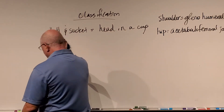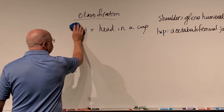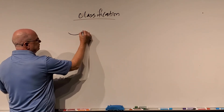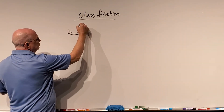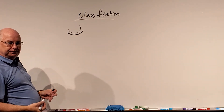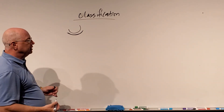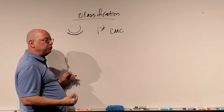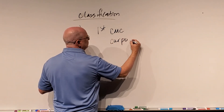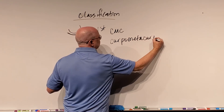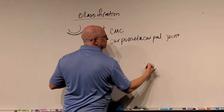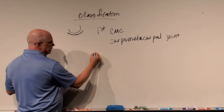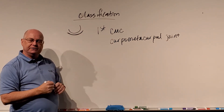The next type is a saddle joint. Think of a saddle placed on a horse — the top is dished out with a fossa. There aren't many great examples of saddle joints, but the first CMC joint — the first carpometacarpal joint, between the first carpal bone and the first metacarpal bone — is a really good example. If you look at that joint it's a classic example of a saddle shape.